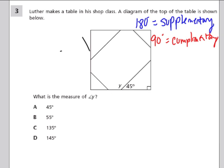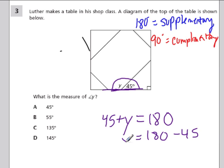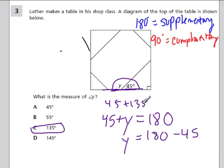Here we can tell this is a supplementary pair because this is a straight line. The angles that make up a straight line have to add up to 180 degrees. The question asks for the measure of y. So 45 degrees plus y equals 180 degrees. Subtract 45 from 180 to get y equals 135 degrees. Check: 45 plus 135 equals 180. That's a supplementary pair.